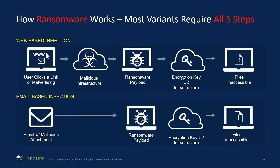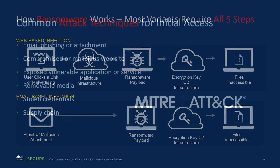When we look at ransomware from a web or email perspective, there are typically five steps: user clicks on malvertising, goes to malicious infrastructure, gets an exploit kit that scans their box. If vulnerabilities are patched and up to date, the exploit kit can't find a vulnerability and nothing more happens — we've mitigated it. Same with command and control: if I get the payload and get popped, it's got to call out to C2. If I can mitigate that call, I've mitigated my risk. I only need to be right in one of these steps; the adversary needs to be successful throughout. Most variants take this approach, so we have multiple opportunities to mitigate.